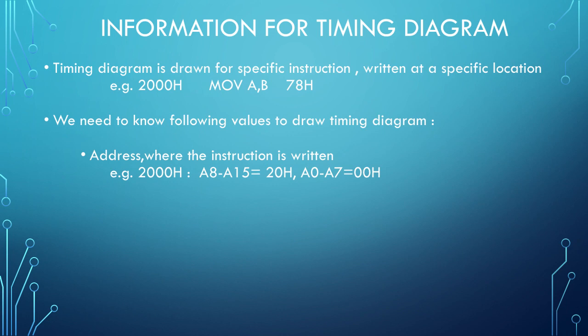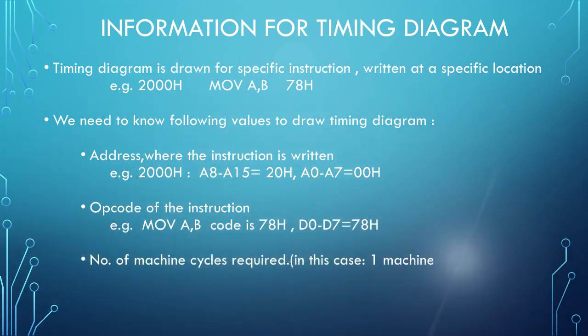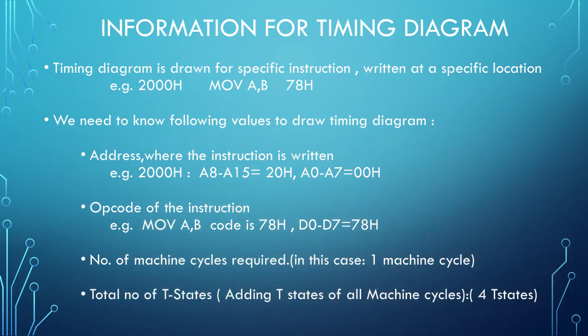We also need the opcode of the instruction — here it is 78h, so data lines D0 to D7 have 78h on them. Then we need to know the number of machine cycles required for this particular instruction: in this case it requires a single machine cycle. And lastly, we need to know the number of T states required — in this case, one machine cycle requiring four T states. This information is obtained from the data sheet of 8085; it is fixed for each and every instruction.